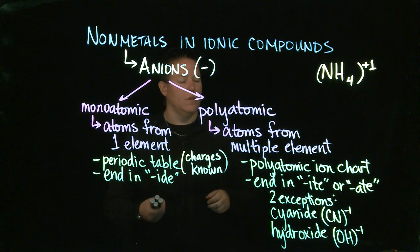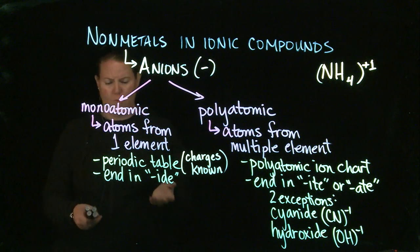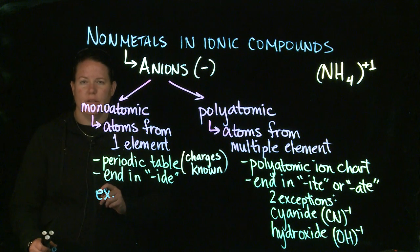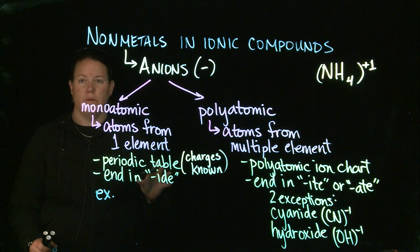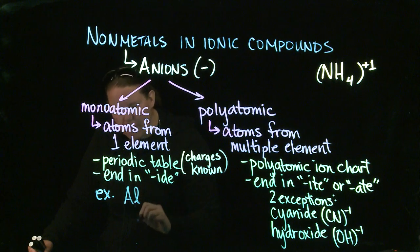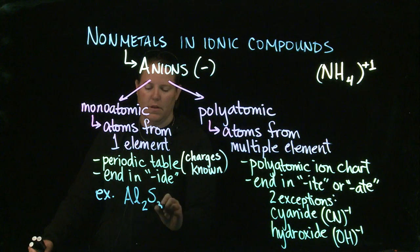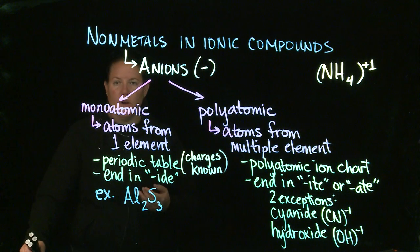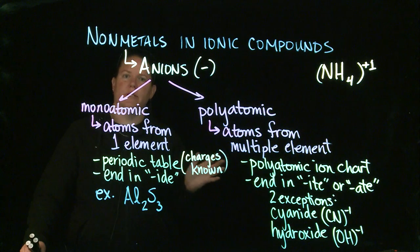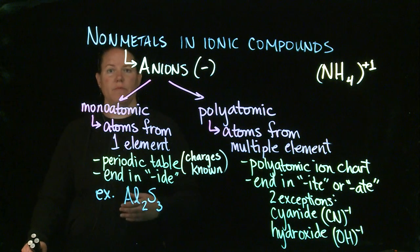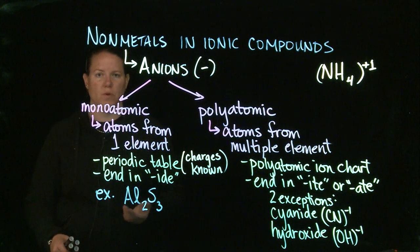Let's do some examples of each of these. An example of a monoatomic anion. Let's do AL2S3. There's an excellent example. When you're looking at this, notice that you know it's an ionic compound, not just because I'm talking about ionic compounds in general, but you know it's an ionic compound because it starts with a metal. It has aluminum. Since aluminum is a representative element, which means it's in the tall parts of the periodic table, groups 1 and 2 and 13 through 18, we know what those charges are.